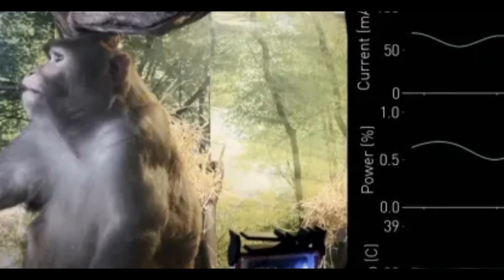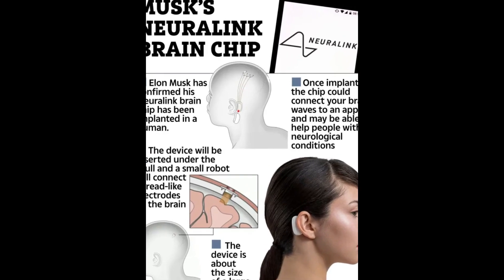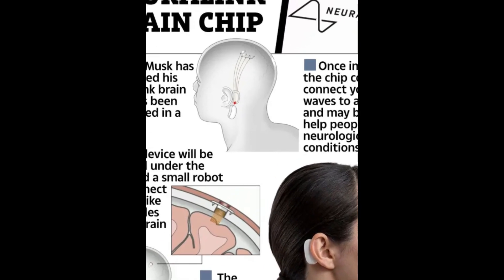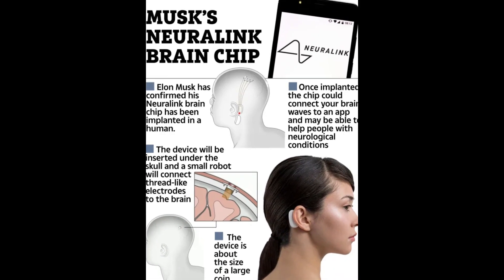Elon Musk's Neuralink has taken a bold step into the frontiers of brain-computer interaction, implanting its first device in a human. This move sends ripples through the scientific and technological communities, igniting both intrigue and cautious optimism. But what exactly is Neuralink, and what grand ambitions does Musk envision for this brain-machine interface?